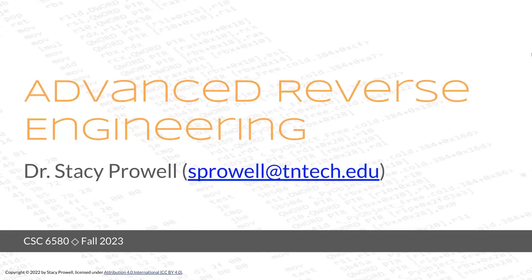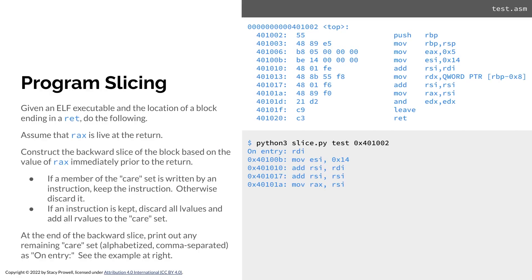Hello and welcome to Advanced Reverse Engineering. There's homework. The homework was to construct program slices, and your slice is pretty simple. We're going to assume that RAX is live at the return, and you need to slice backward to figure out what goes in there.